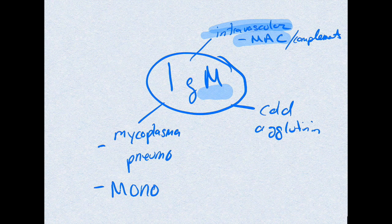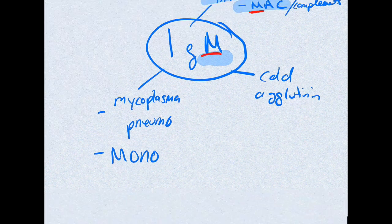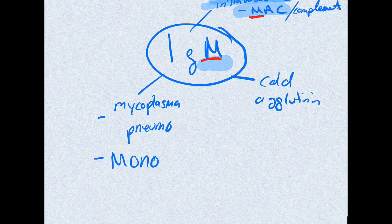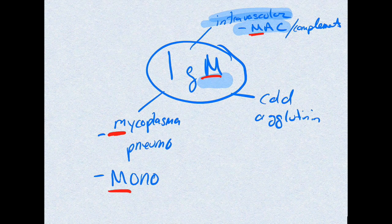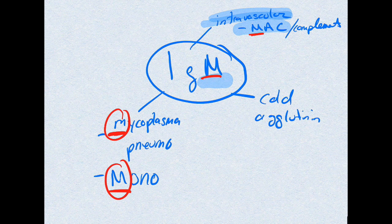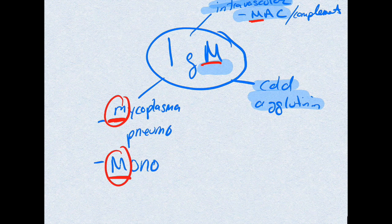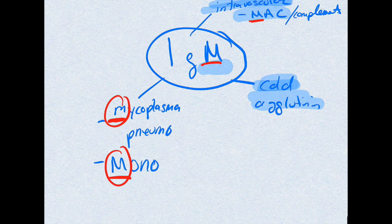A useful mnemonic: IgM is associated with the MAC complex (M), mycoplasma (M), and mono (M). As opposed to the warm agglutination of IgG, IgM binds RBCs in the cold temperatures of the extremities — cold agglutination. This is an important differentiation between IgM and IgG, and it can be useful in diagnosing something like mycoplasma pneumonia.